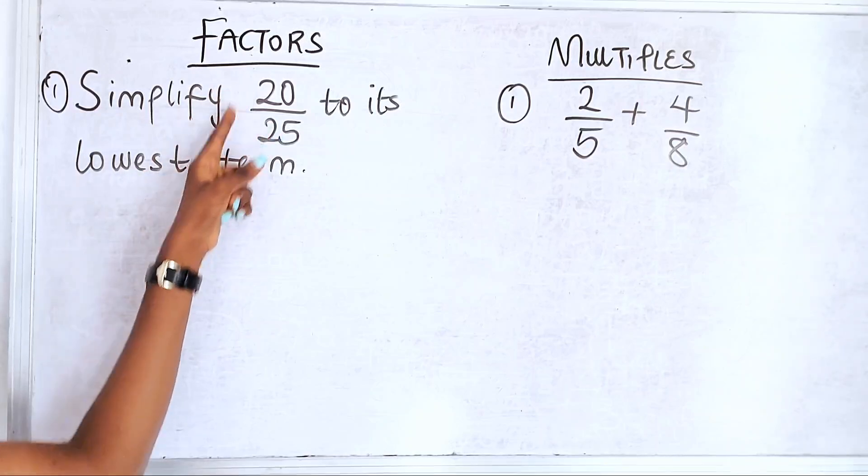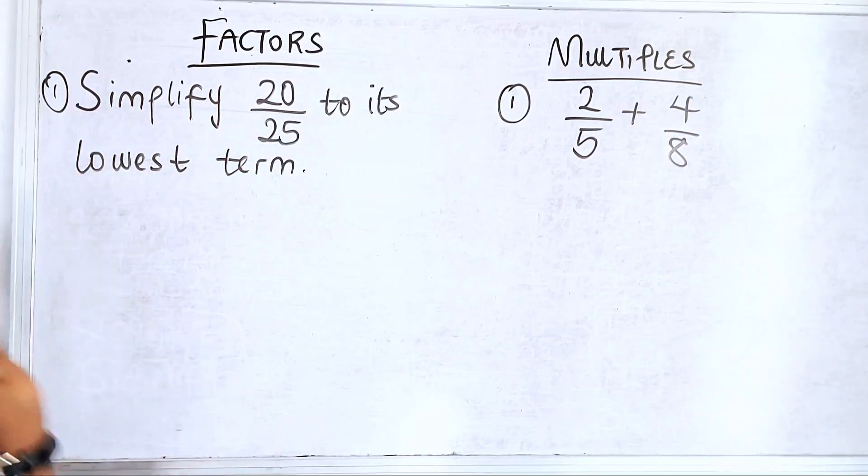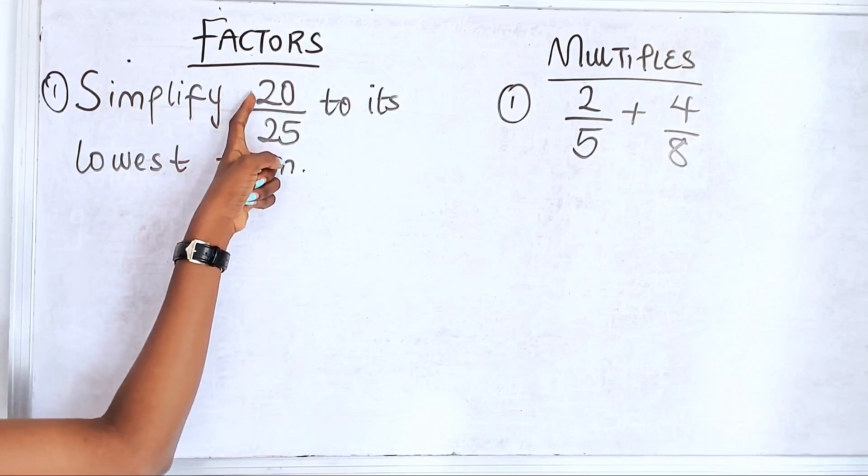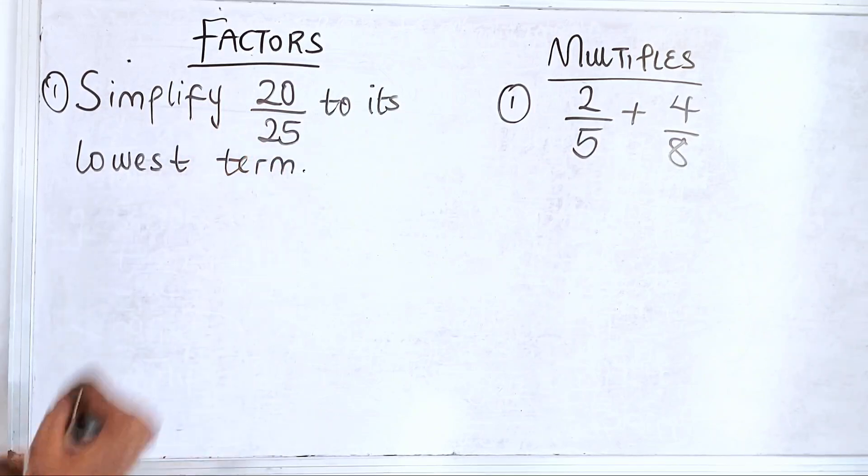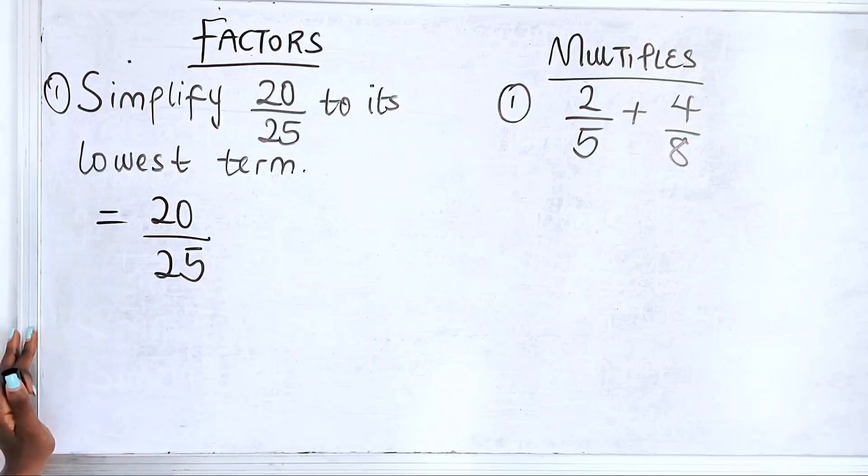What are the highest common factors here? Meaning, what is the largest number that can go in 20 and simultaneously go in 25? 5 can go and 5 can go.